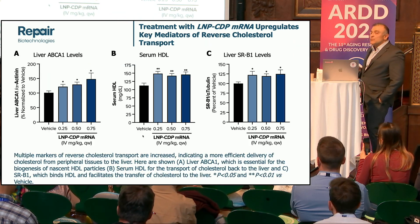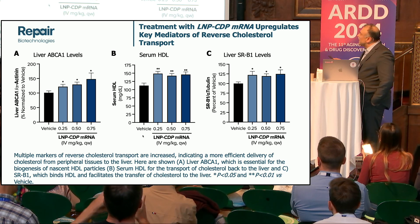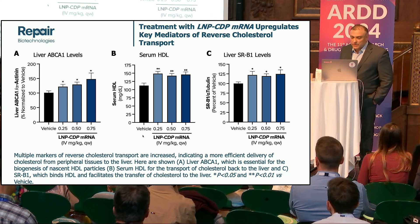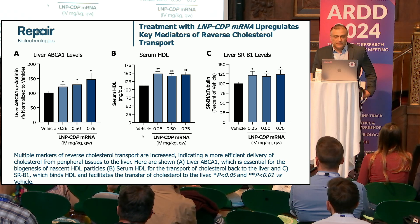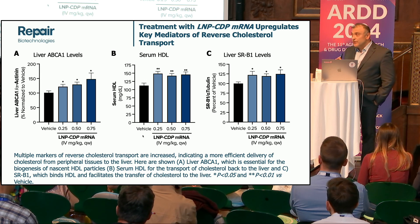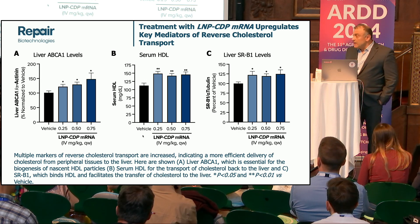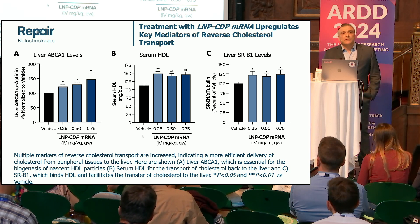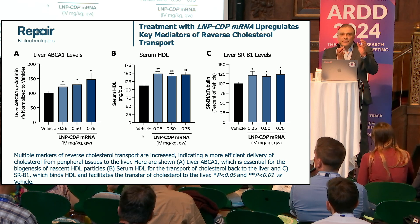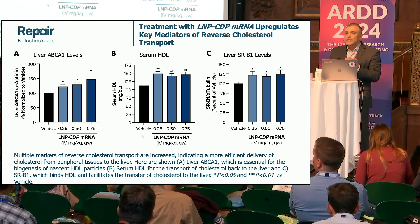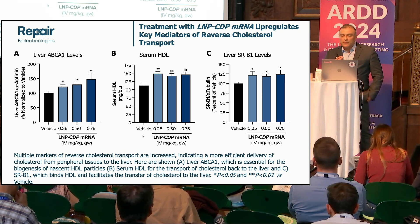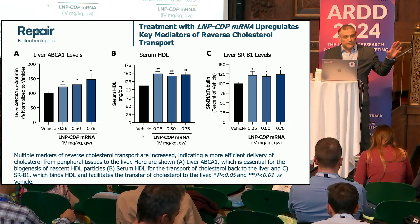How are we achieving this? We're trying to crack the mechanism. It turns out that treatment with our LNP-CDP mRNA upregulates key mediators in reverse cholesterol transport. We have an upregulation of ABCA1 transporters, which are very important in the production of nascent HDL particles. HDL is also increased, as well as SRB1 — the scavenger receptor on the surface of hepatocytes that tethers the HDL particle returning to the liver and facilitates transfer of cholesterol into the hepatocyte. All of this provides more efficient delivery of cholesterol from peripheral tissues back to the liver.